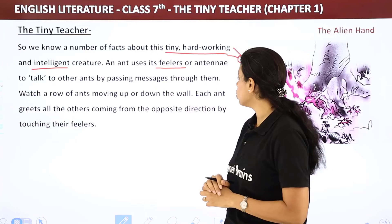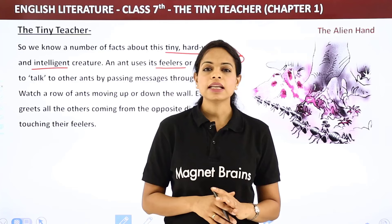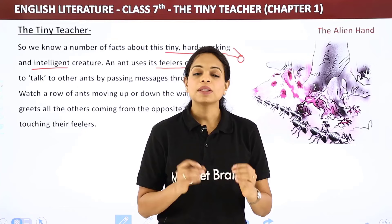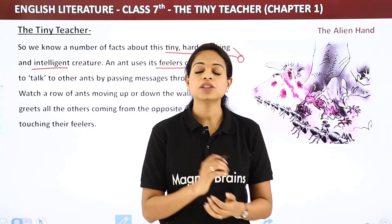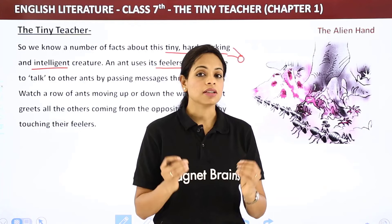Watch a row of ants moving up or down a wall — each ant greets all the others coming from the opposite direction by touching their feelers. Unlike humans, who ignore people they don't like, ants greet each other every time they meet, passing messages. That is something we should learn from ants.